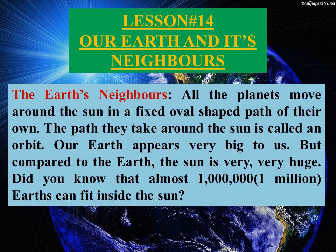The path they take around the sun is called an orbit. Our earth appears very big to us, but compared to the earth, the sun is very, very huge. Did you know that almost 1 million Earths can fit inside the sun? The sun is very huge. Do you know that 1 million Earths fit in the sun?